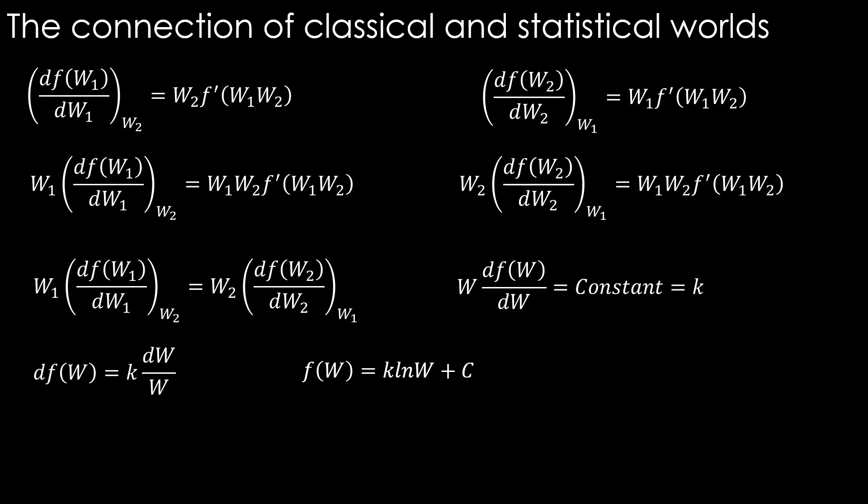Till now we have not seen the third law of thermodynamics. However, we will use it here to know the integration constant C. According to the third law, at 0 Kelvin, entropy is 0 and W is 1. There is only one way, one microstate possible at 0 Kelvin. This implies that C is 0.